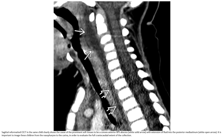Let's see the same case on CT. Clearly there is bulging soft tissue with a convex anterior retropharyngeal space collection. It is important to image from the nasopharynx to the carina in order to evaluate the full craniocaudal extent of the collection.